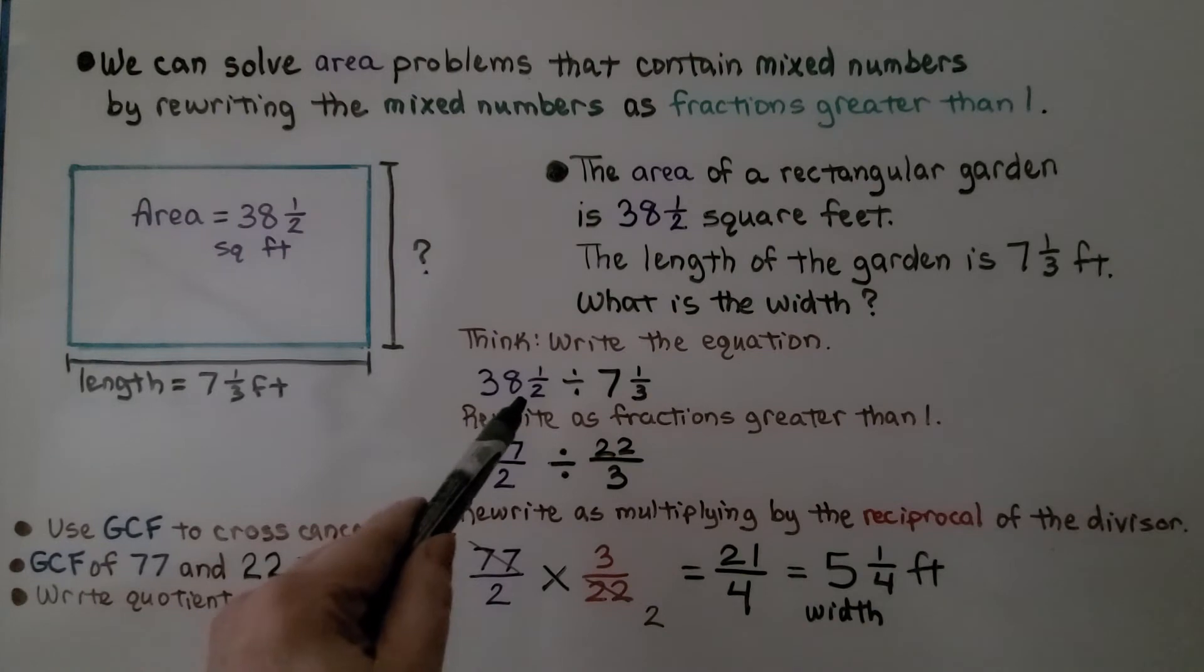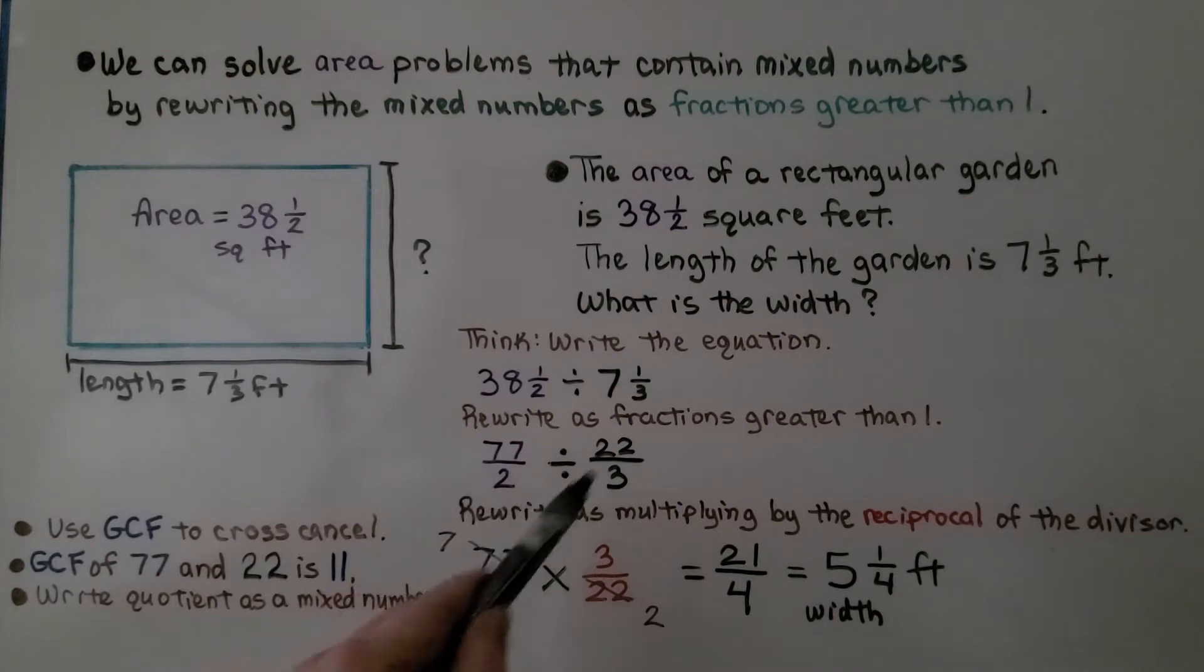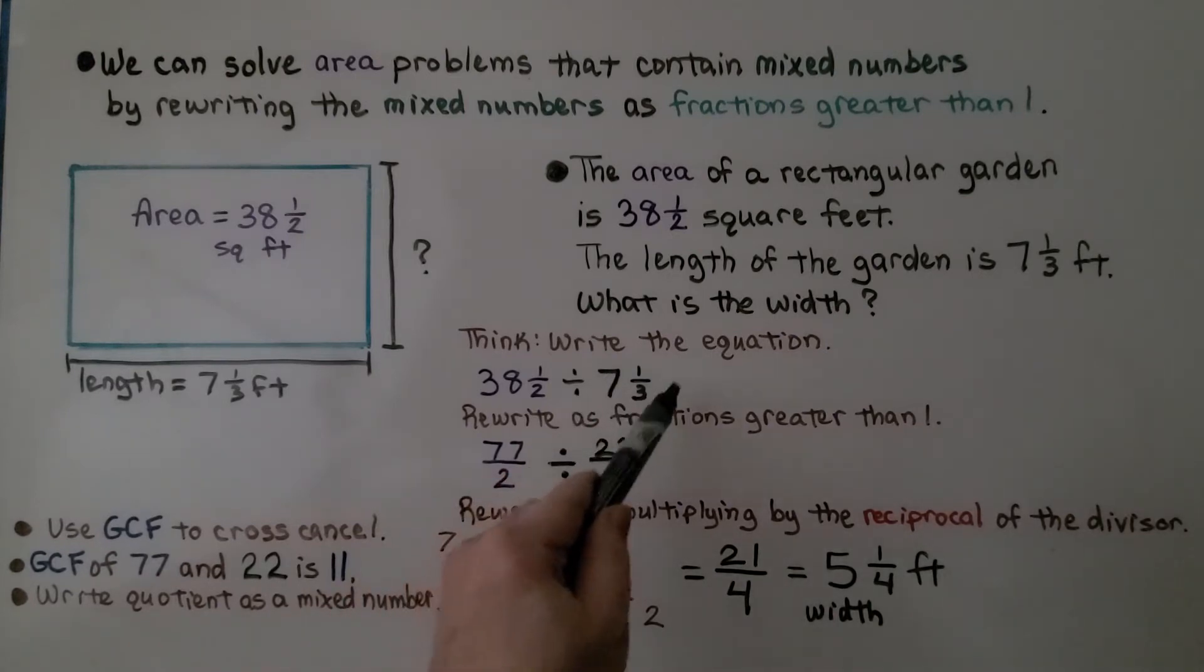38 times 2 plus 1 is 77. We write it over that denominator. We have 77 halves. 7 times 3 is 21 plus 1 as the numerator. We have 22 thirds. We write it over that denominator.